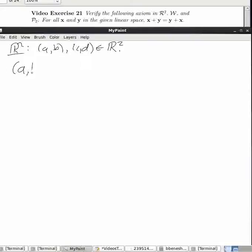I'm going to add them together and show that this thing plus CD is eventually equal to CD plus AB. I can use the definition of addition here to be A plus C, B plus D.